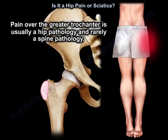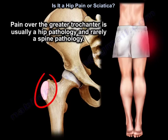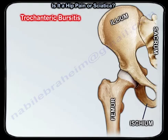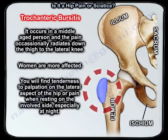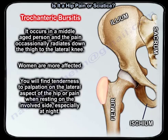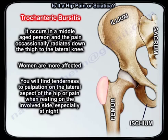Pain over the greater trochanter is usually a hip pathology and rarely a spine pathology. Trochanteric bursitis occurs in middle-aged persons and occasionally radiates down the thigh to the lateral knee. Women are more affected. You find tenderness to palpation on the lateral aspect of the hip or pain when resting on the involved side, especially at night.